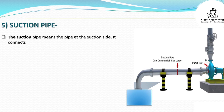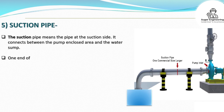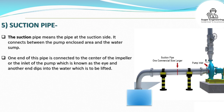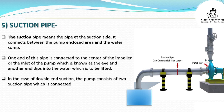Suction pipe: The suction pipe is the pipe on the suction side. It connects the pump enclosed area to the water sump. One end is connected to the center of the impeller — the eye — and the other end dips into the water to be lifted. In the case of double-end suction, the pump consists of two suction pipes connected to the eye from both sides.